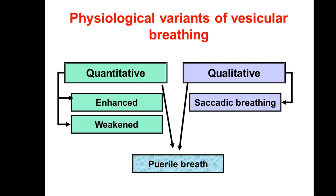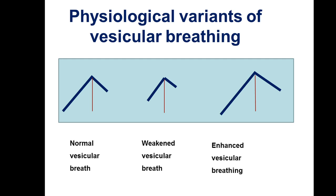There are physiological variants of vesicular breathing due to quantitative and qualitative changes. Quantitative changes mean increasing, enhancing, or weakening of vesicular breathing. Qualitative changes include saccadic breathing and puerile breathing. In normal vesicular breathing, the inspiratory phase is longer than the expiratory phase. In weakening, both phases decrease; in enhanced vesicular breathing, both inspiratory and expiratory phases are prolonged.